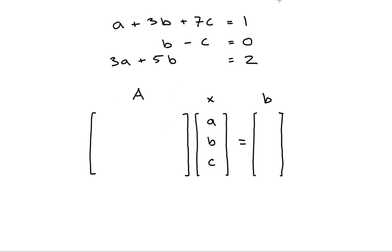From the first equation, we have that A plus 3B plus 7C equals 1. So, in the first row of the A matrix, we'll put the values 1, 3, and 7, and in the first row of the B vector, we'll put 1. We can do a quick check to see that this agrees with the equation.